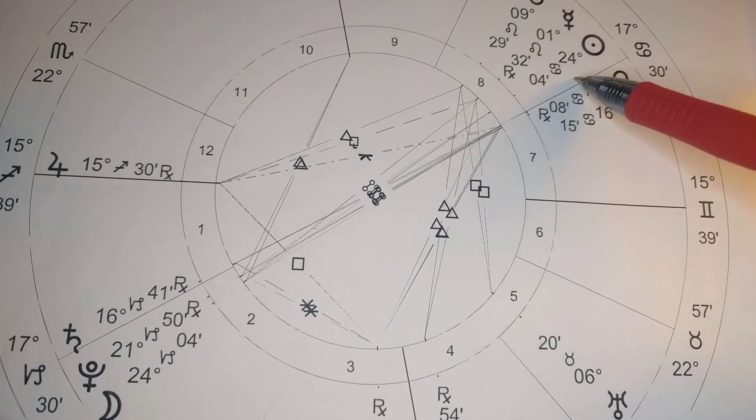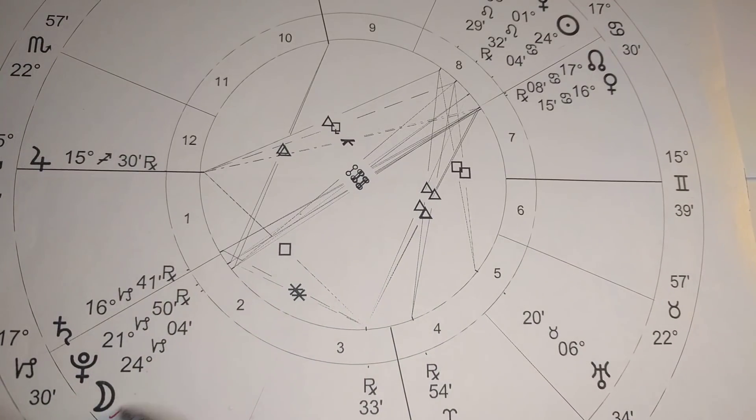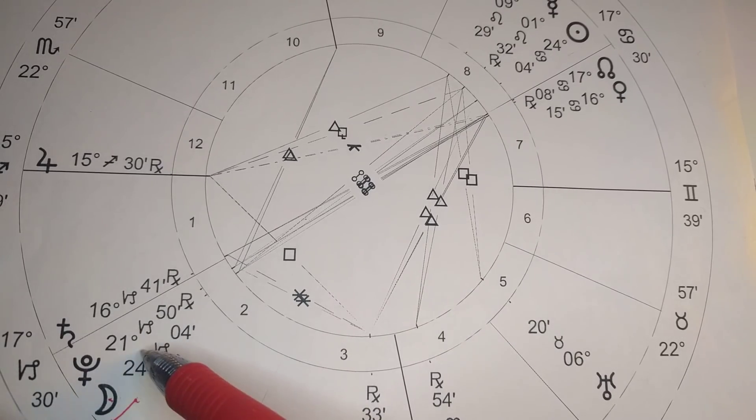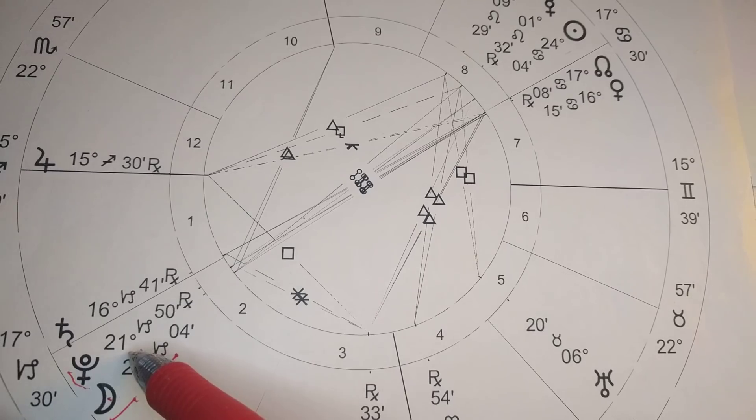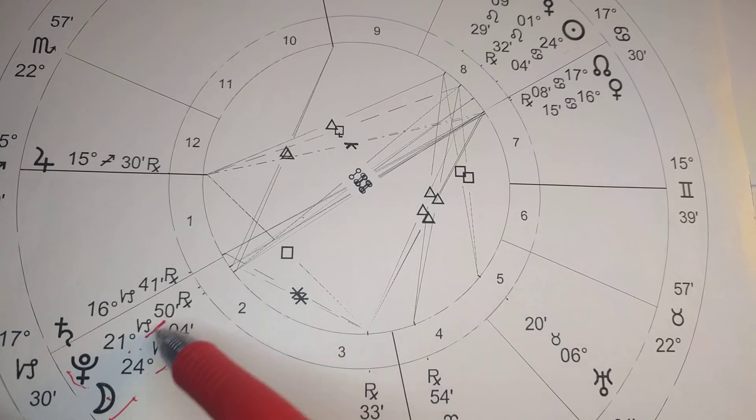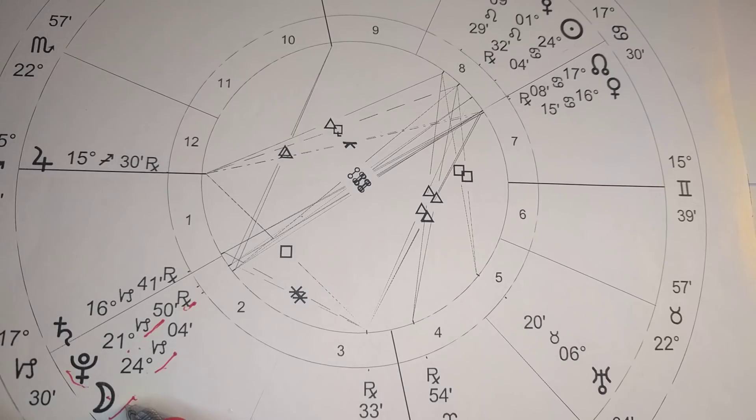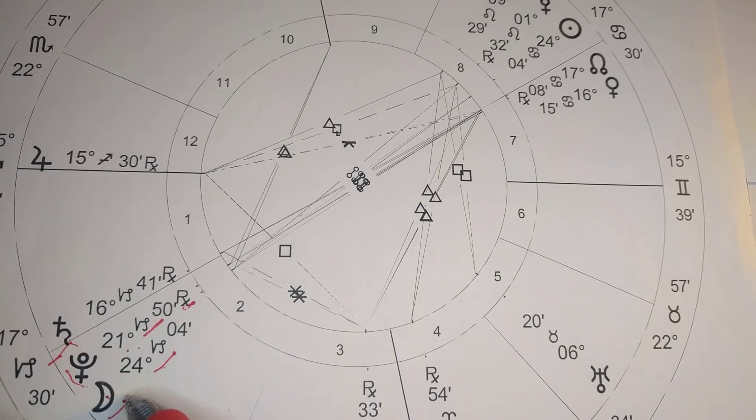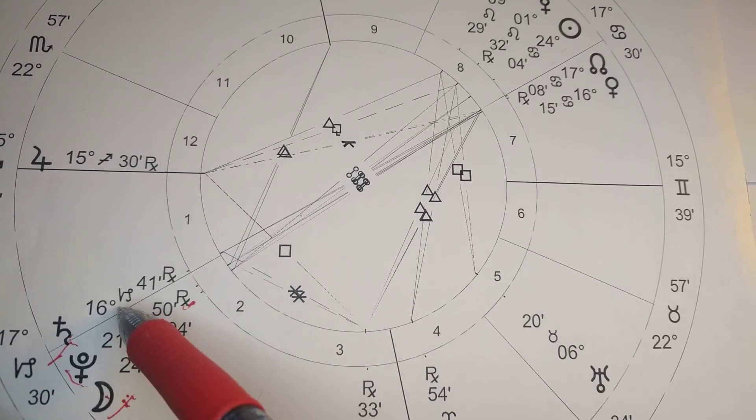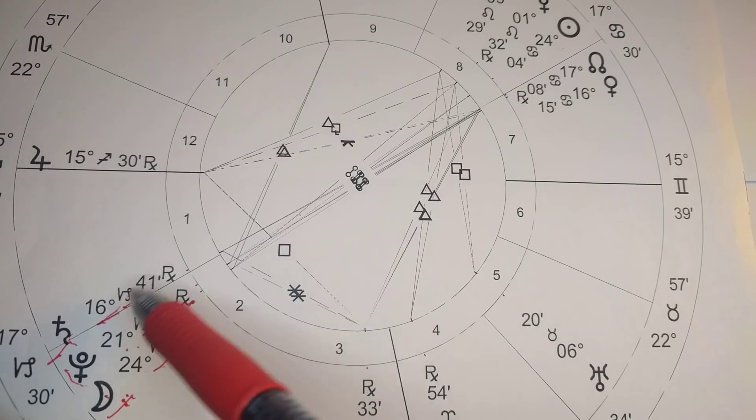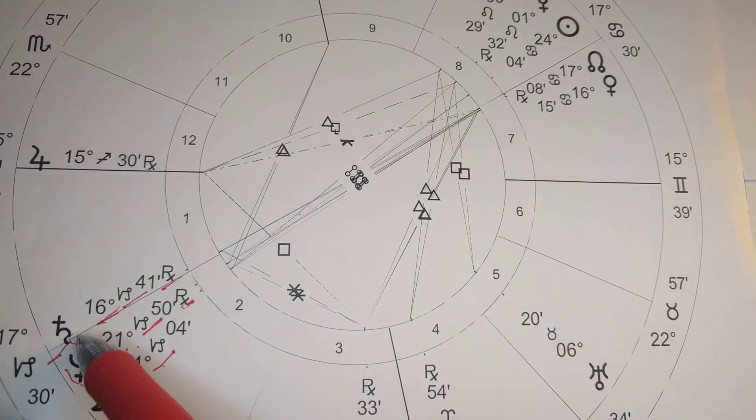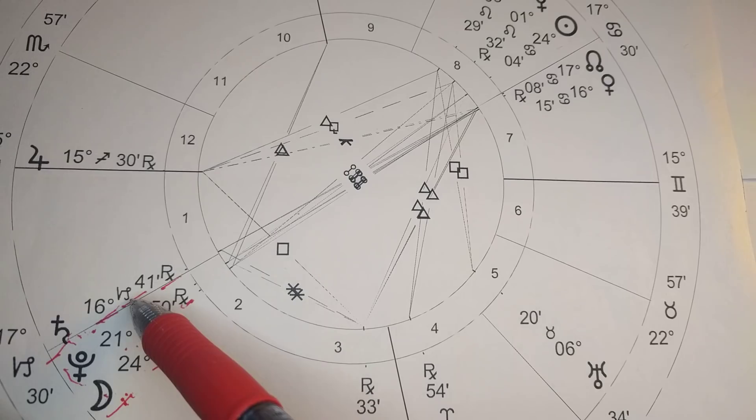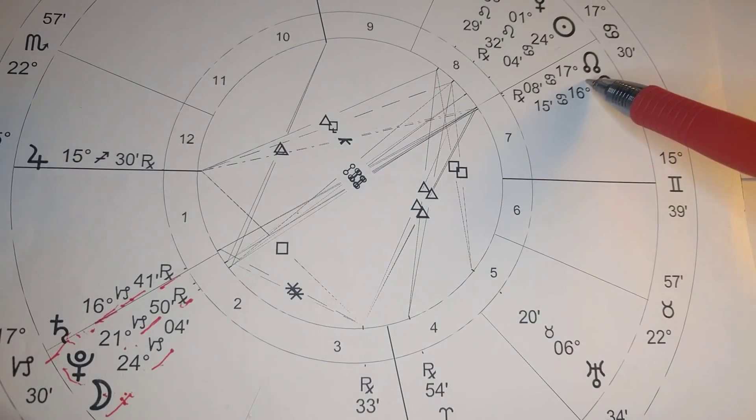In this case, we have the Sun at 24 degrees of Cancer, the Moon at 24 degrees of Capricorn. The full moon is conjunct Pluto at 21 degrees of Capricorn retrograde. The full moon is ruled by Saturn because Saturn rules Capricorn, and Saturn is at 16 degrees Capricorn retrograde.